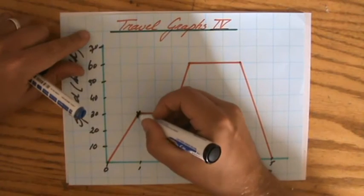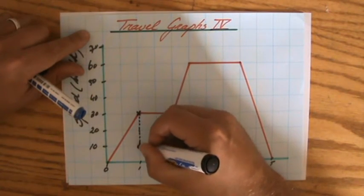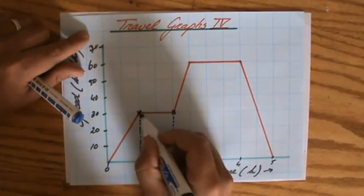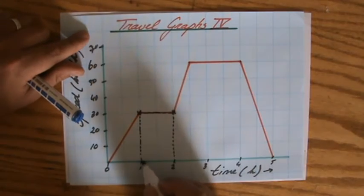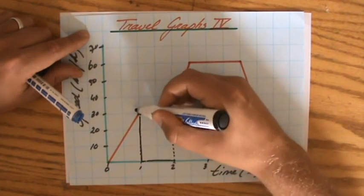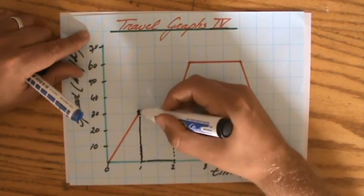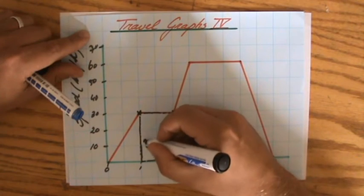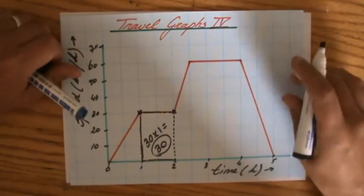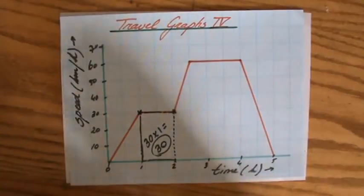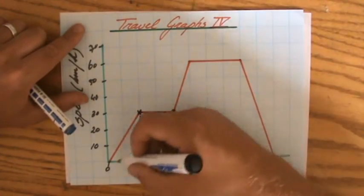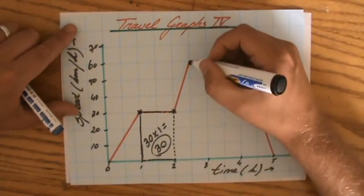And that happens to be the area underneath. If I just look now at this rectangle, the area underneath my graph. Because a rectangle, the area is length times width, so 30 times 1. So the distance is given by the area underneath your graph. Very nice. I'm going to check that in a minute for that triangle.